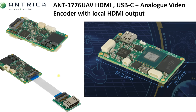Another option we are developing is called the 1776UAV. This has an HDMI input, a USB-C input, analog video inputs, and also supports HDMI output. This is a 50 by 25 millimetre board — very small. You can see the USB connector and a breakout cable for the HDMI. HDMI is notoriously poor as a video interface in drones due to mechanical constraints, so we've provided a flexible ribbon cable for the HDMI connection to offer stress relief.